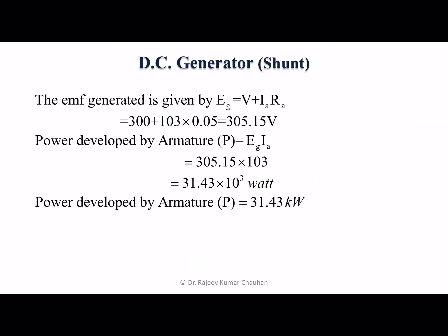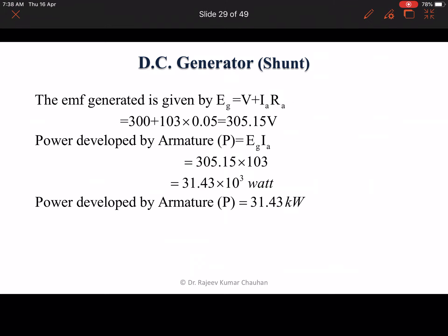Power developed by armature P equals Eg times IA. So P equals 305.15 multiplied by 103. The total power developed by the armature is this much, or we can say 31.43 kilowatt.